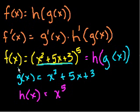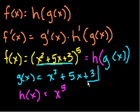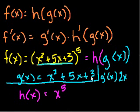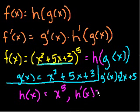So the chain rule tells us that f prime of x — before applying the formula, let's figure out the derivatives of g of x and h of x. So g prime of x is equal to 2x plus 5, and the derivative of 3 is just 0. And h prime of x is equal to 5x to the fourth.